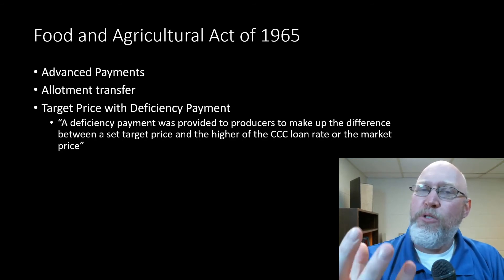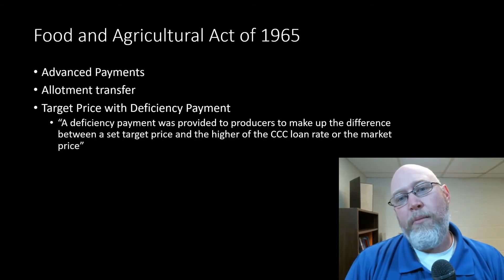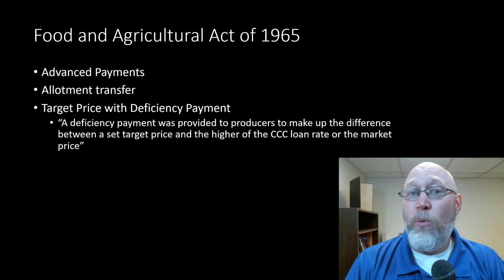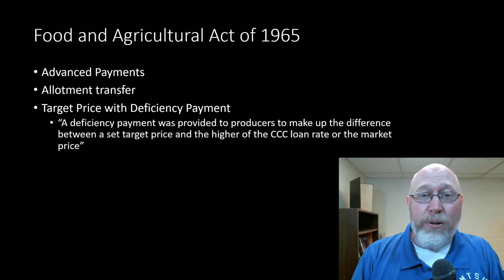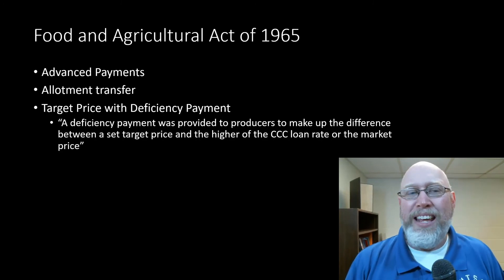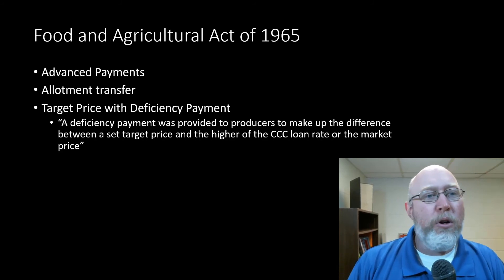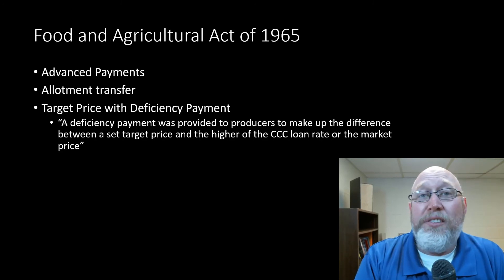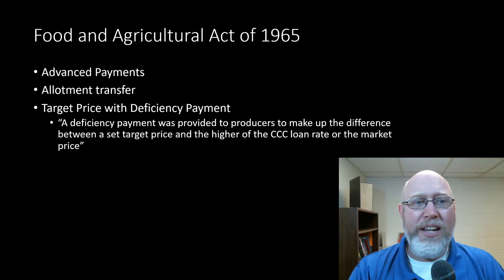When I was doing this as a kid in the 1980s, the amount of profit you could make farming the tobacco was about equal to what you could sell the allotment for. So the decision was: work hard all summer growing tobacco and make some profit, or lease your allotment to somebody else for the year and make the same amount of money. People who wanted to farm big would go around the county finding farmers willing to sell them, in essence, a license to grow tobacco for the year.